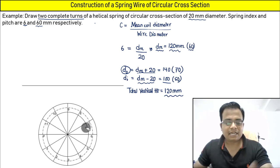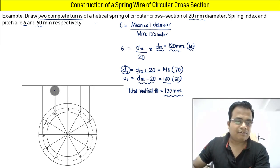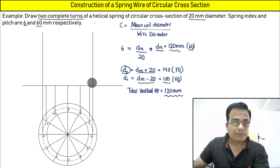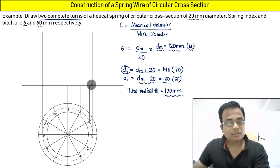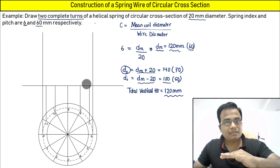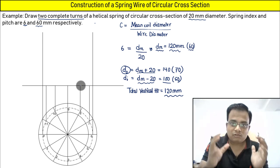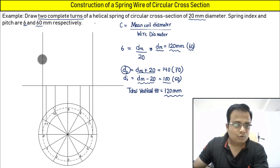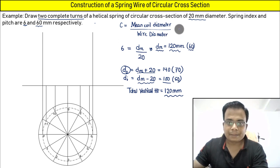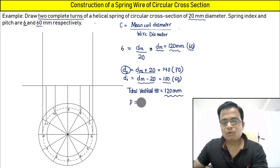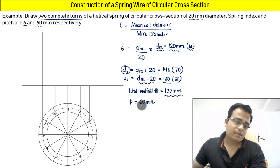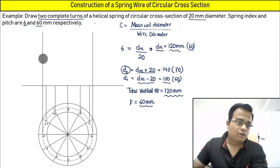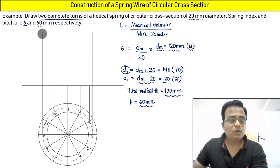Now let's set up the front view. The height is 120 mm — two revolutions at 60 mm pitch each. The pitch P = 60 mm. If there were only one revolution, we would use 12 divisions for the height, but since there are two revolutions, we need 24 divisions.